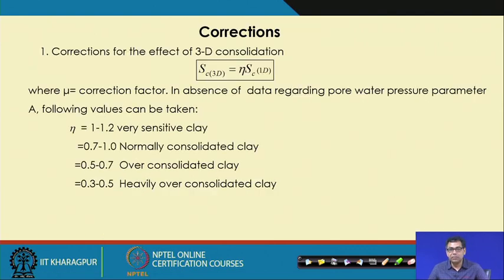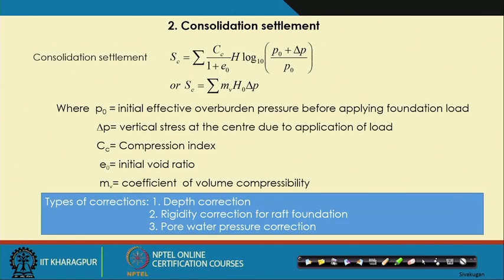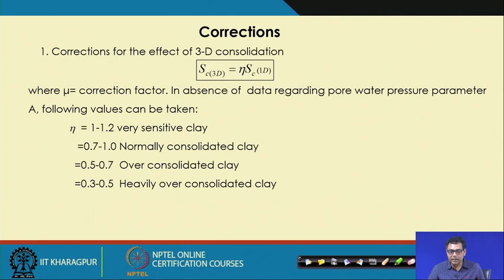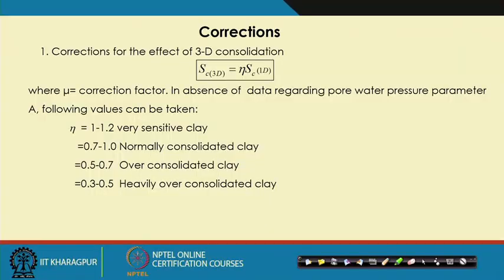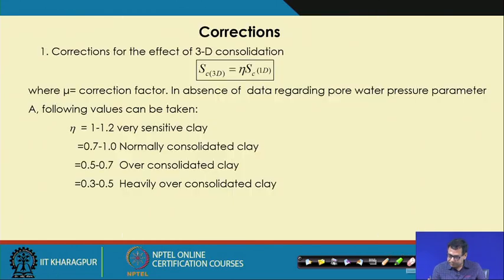Three corrections are needed for consolidation settlement: depth correction (for all foundations), rigidity correction (for raft/rigid foundations only, not flexible isolated footings), and pore water pressure correction (for both flexible and rigid footings). The pore water pressure correction is required because the consolidation equations assume 1D deformation, but actual consolidation is a 3D problem — water can flow in any direction.